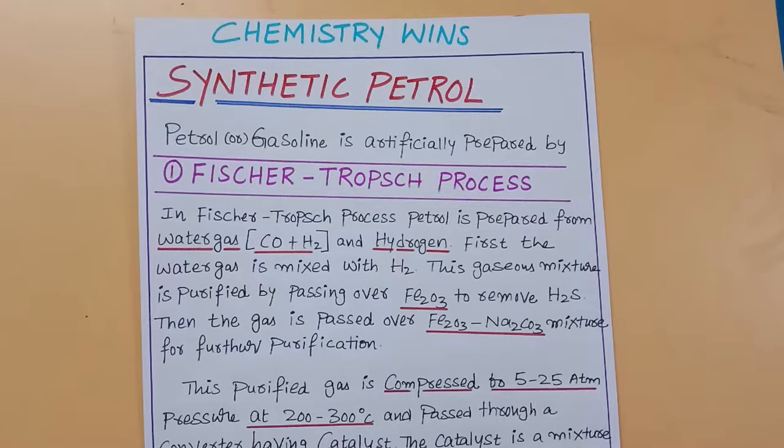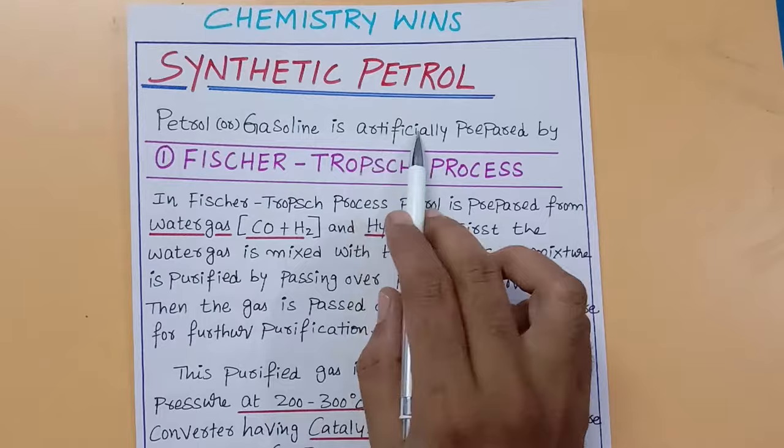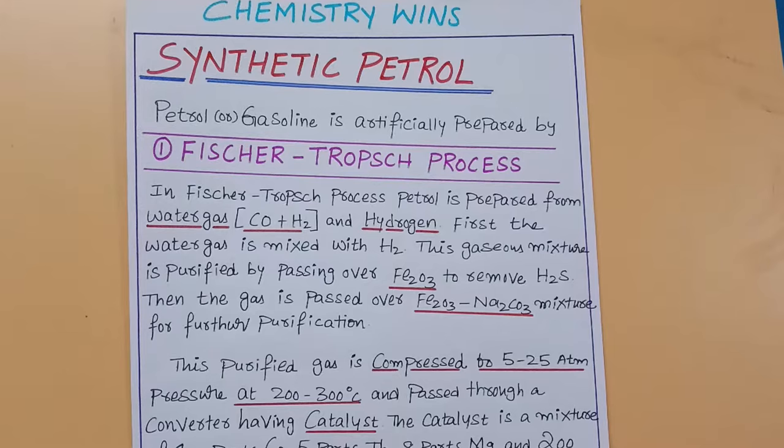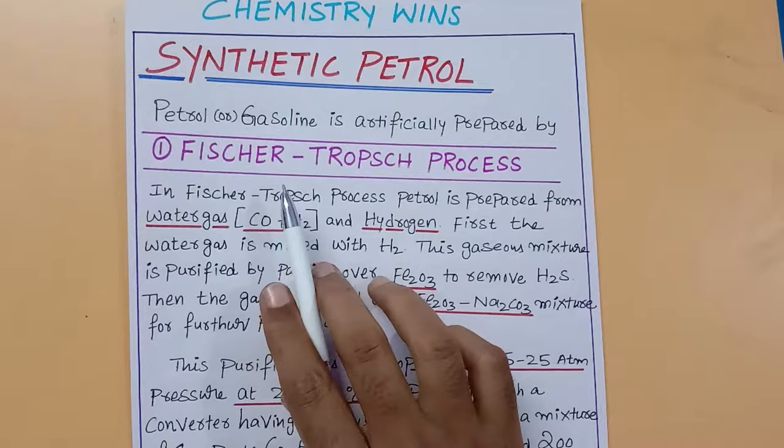One such method is the Fischer-Tropsch method. Because petrol has huge demand, we can prepare it artificially. One of the methods to prepare it is Fischer-Tropsch method. Petrol is a secondary fuel. Petrol is obtained from petroleum. Petroleum is the primary fuel. We refine petroleum to get petrol.